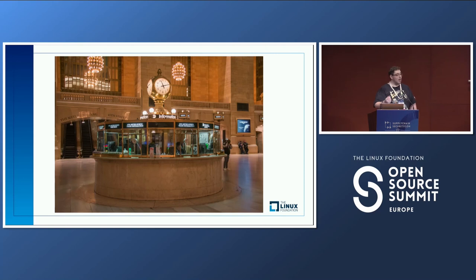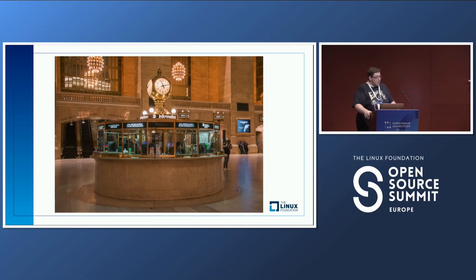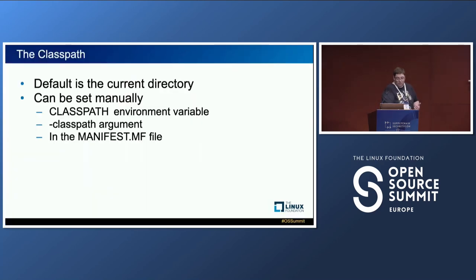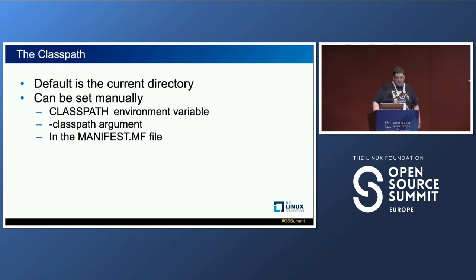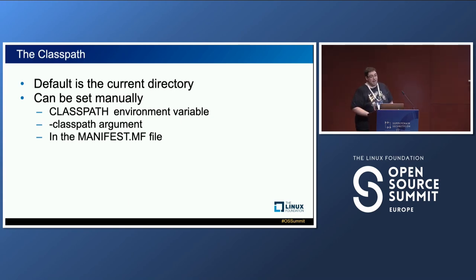The classpath is basically an information booth — when Java wants to actually find the classes you're using, it goes to the classpath, looks for all of those classes, and then sends all of the class loaders to those places. The default is the current directory from which you're running the Java program, but you can set it manually using an environment variable, the -classpath argument for the java command, or in the manifest file.